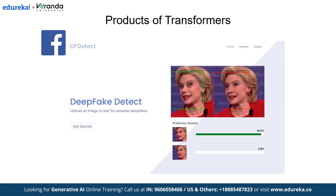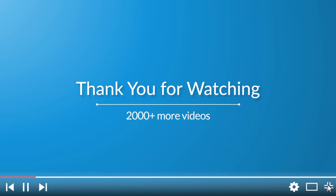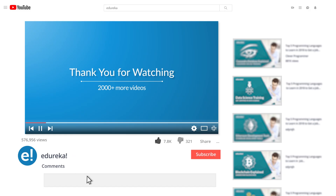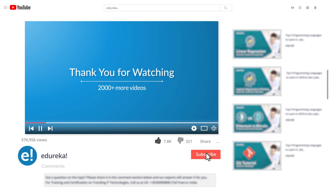In conclusion, transformers are changing the tech world by enabling smarter, faster, and more efficient AI systems. Whether it's generating text, translating languages, or enhancing search engines, these models are the cornerstone of modern AI. With this, we have come to an end to this video on Transformers in Generative AI. If you enjoyed this video, please like it and comment any doubts or queries — we will reply at the earliest. Do look up more videos and playlists and subscribe to Edureka's YouTube channel to learn more. Thank you very much for watching, and happy learning!